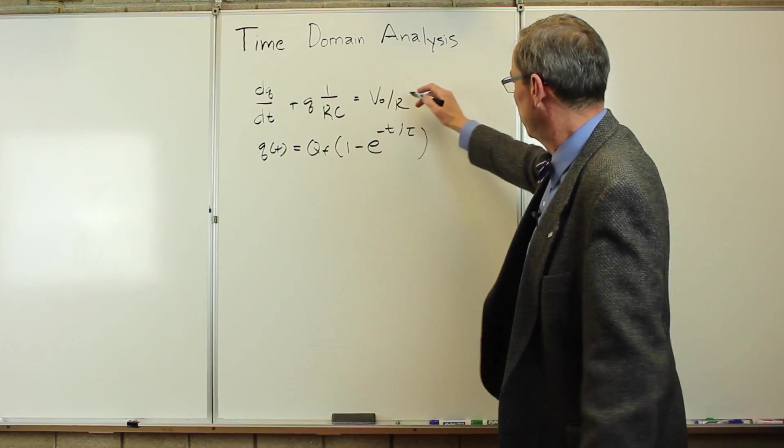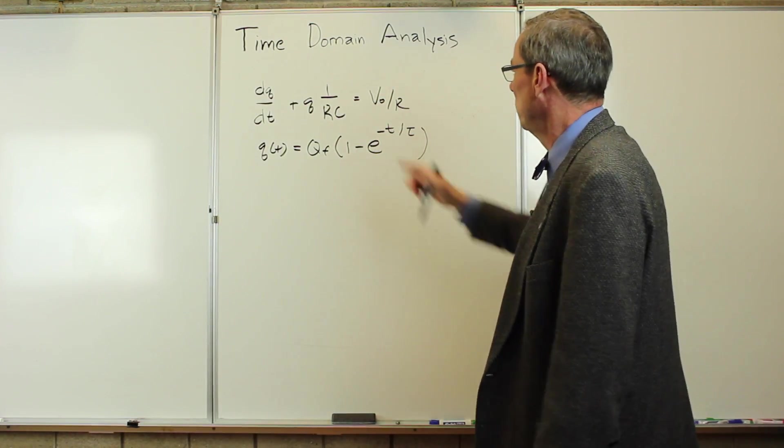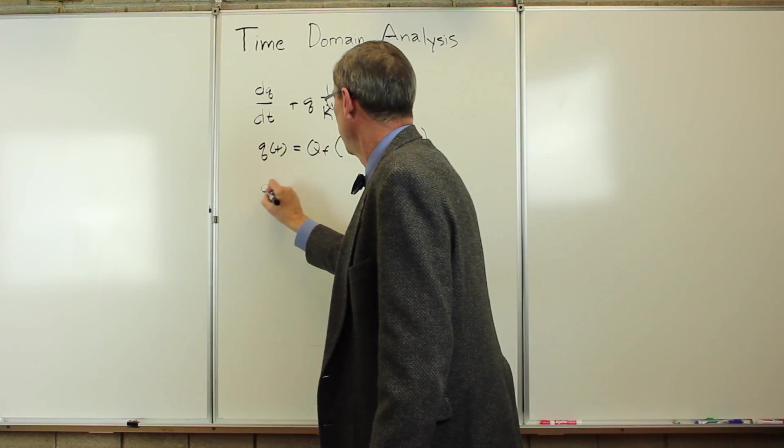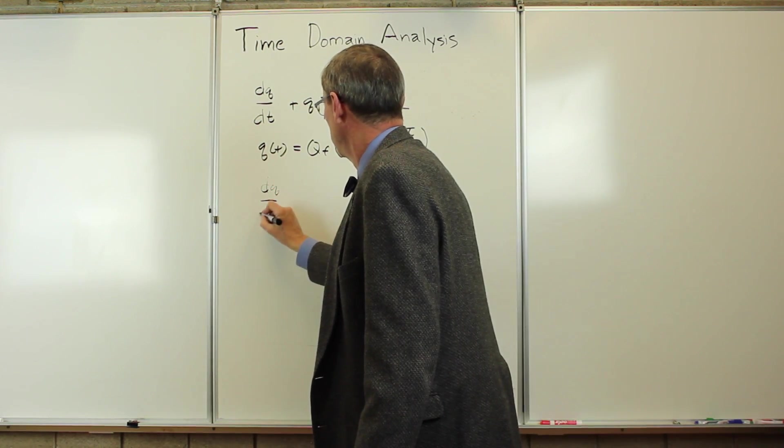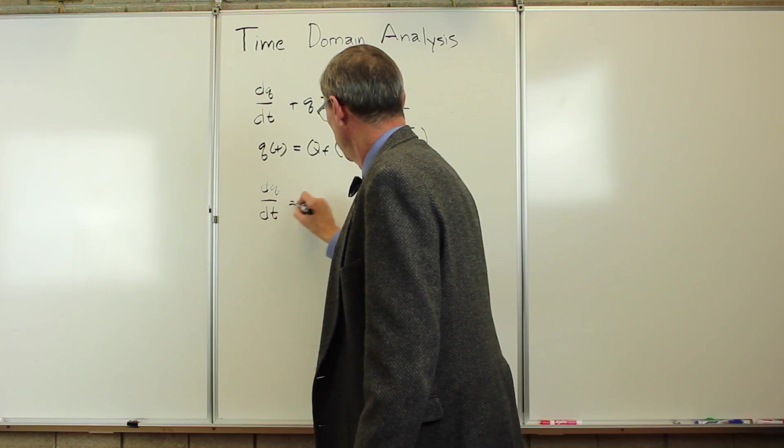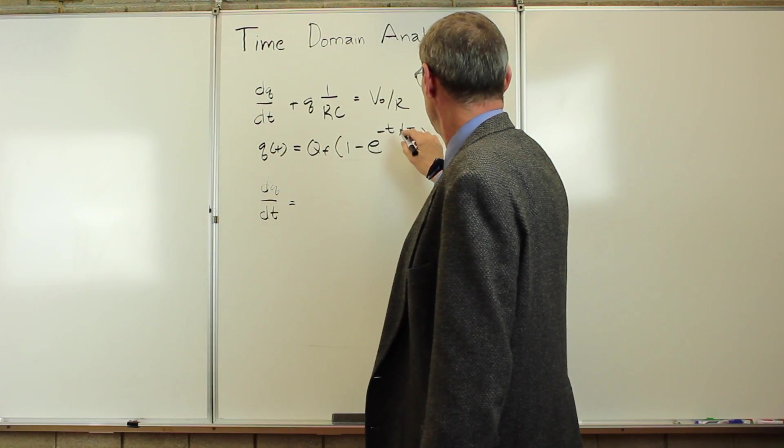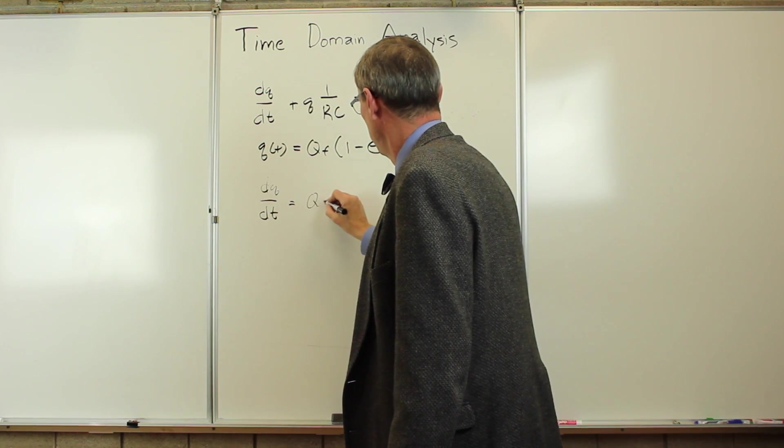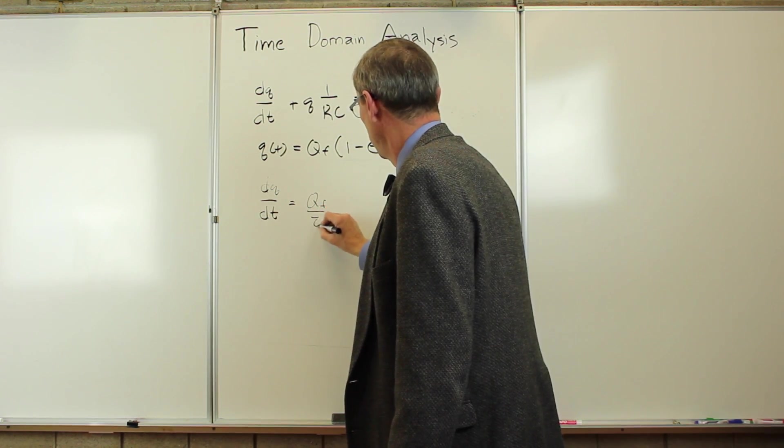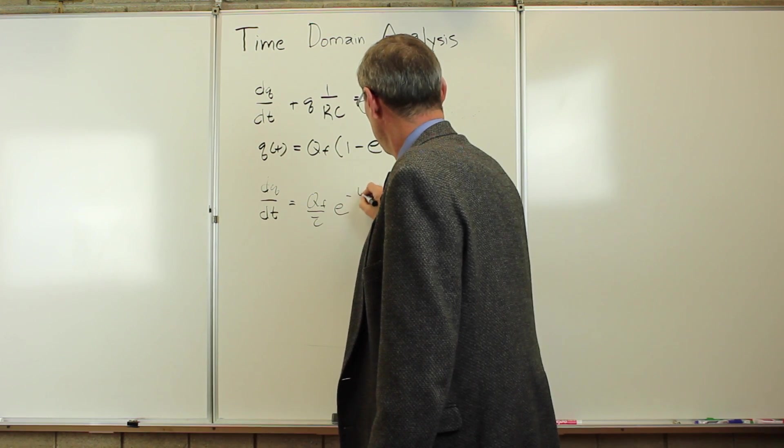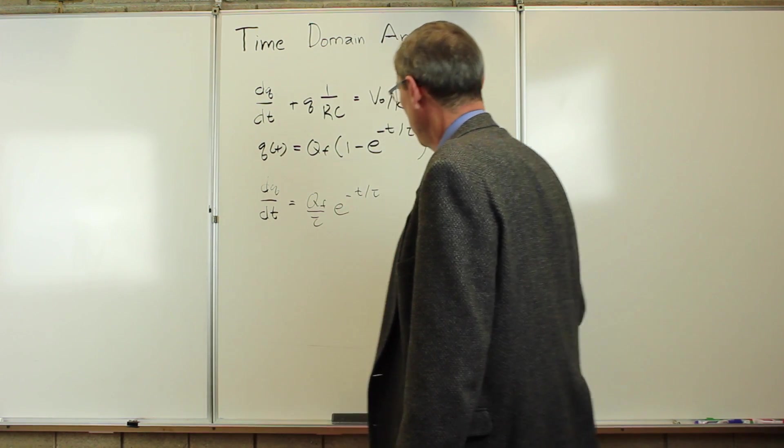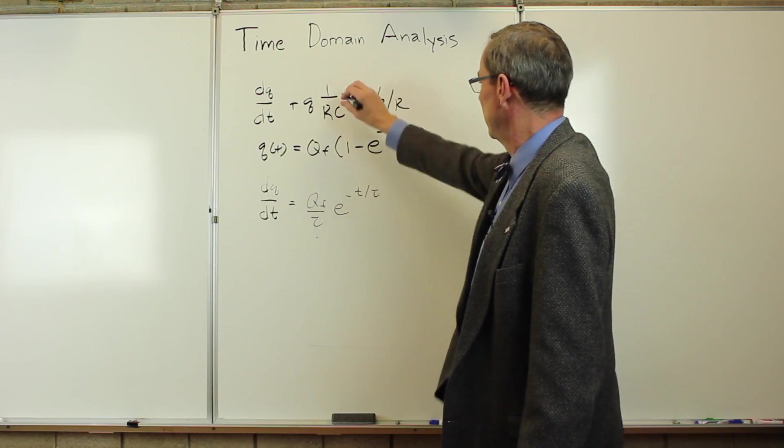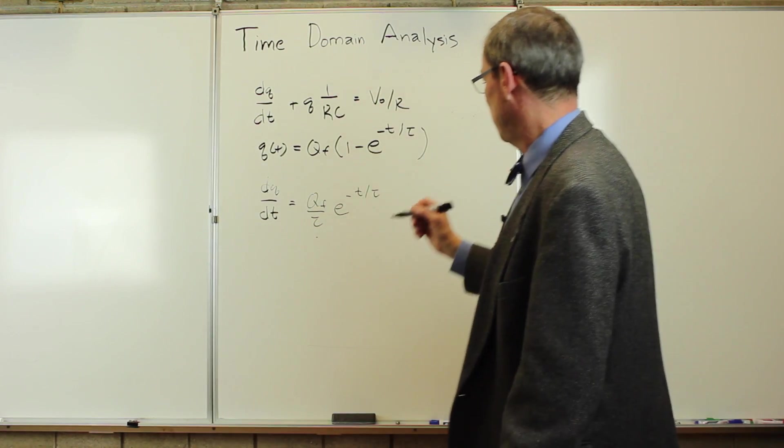So here we have the differential equation, our guess for Q. We need the first derivative. So we'll just simply do that, dQ/dt, take the derivative of that. The minus 1 over tau is going to come down. We're going to get a Q_final over tau, e to the minus t over tau. And now we're going to plug this and this into that expression.